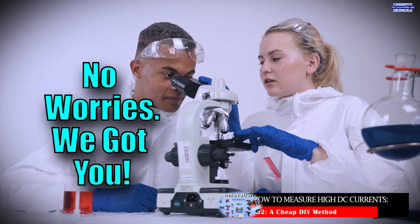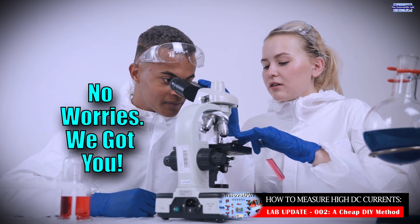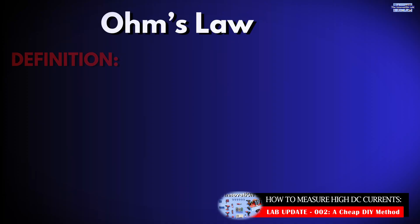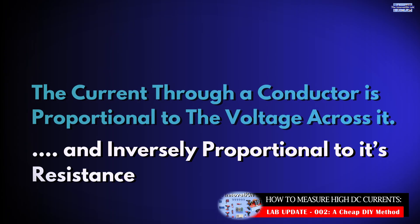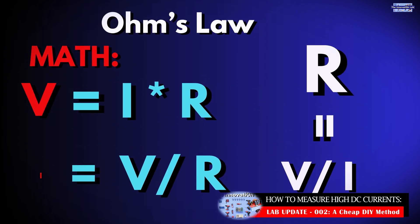For those of us who may not have a science or engineering background, Ohm's law is a law in physics that states that the current flowing through a conductor is proportional to the voltage across that conductor and also inversely proportional to the resistance of the conductor. Expressing Ohm's law as a simple math equation takes the form of V equals I times R, where V is the voltage across the conductor, I is the current going through that conductor, and R is the resistance of that conductor.